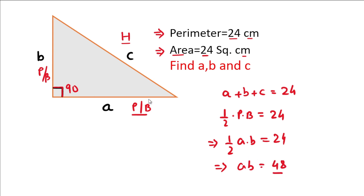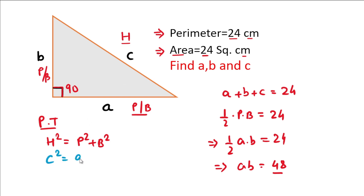Since this is a right angle triangle, by the Pythagorean theorem, the hypotenuse squared equals the perpendicular squared plus the base squared. So c squared equals a squared plus b squared.